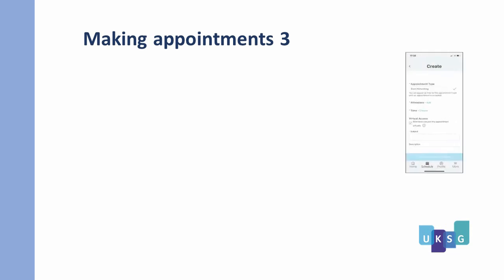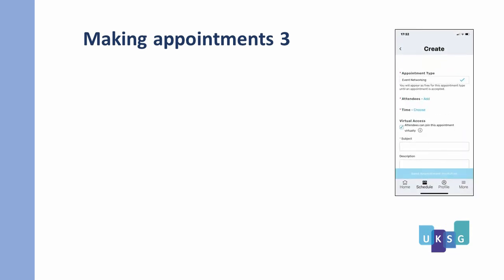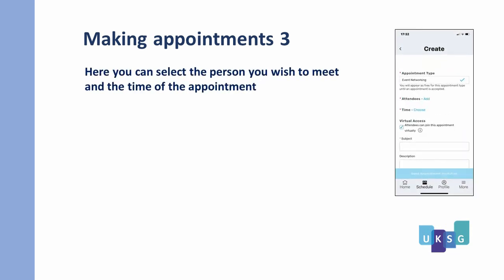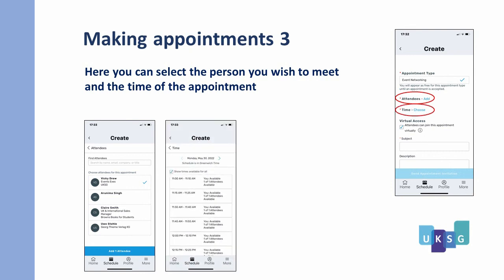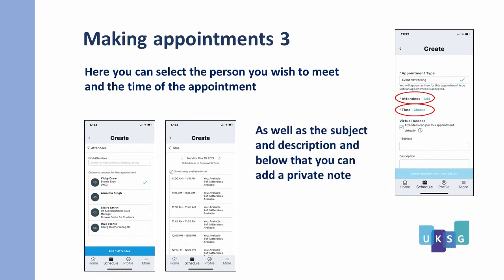Having decided you wish to make an appointment, you can select the person you wish to meet from the list of attendees and select the time of the appointment, with all your available and unavailable time shown on the screen. You can also add a subject, a description, and a private note.